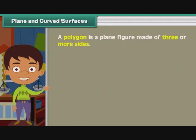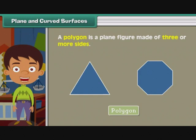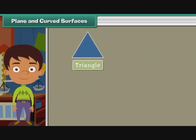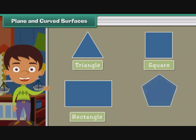A polygon is a plane figure made of three or more sides. Various types of polygons are triangle, square, rectangle, and pentagon.